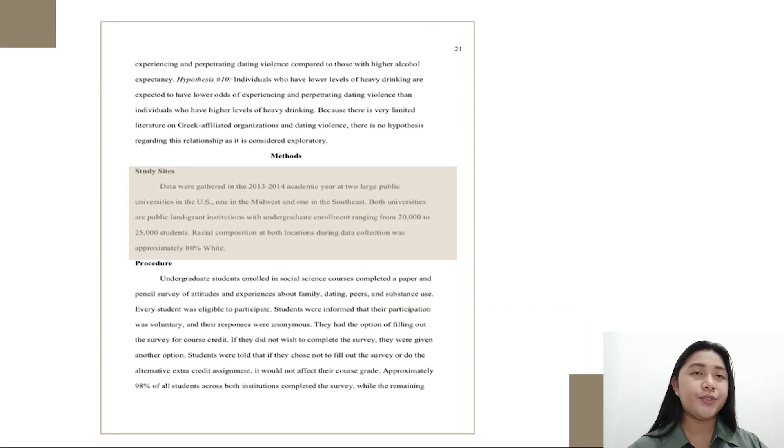Let's proceed to the next slide. The data were gathered in the 2013 to 2014 academic year at two large public universities in the United States, one in the Midwest and one in the Southeast. Both universities are public land-grant institutions with undergraduate enrollment ranging from 20,000 to 25,000 students.